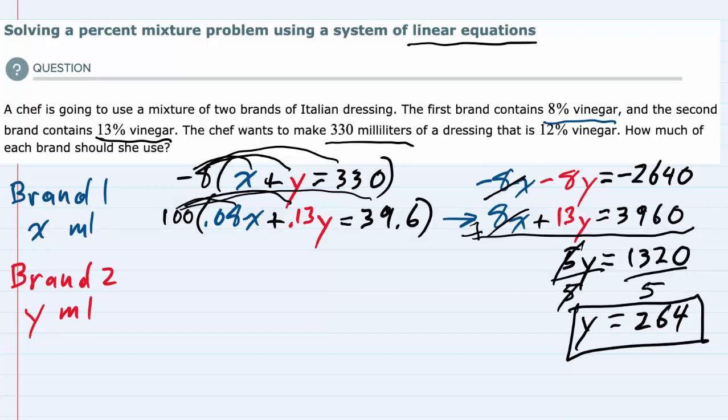We have half of our solution. I'll substitute y = 264 back into the original equations. I'll use the top equation since it's clean: x + y = 330. Substituting, we get x + 264 = 330.